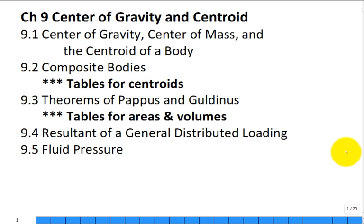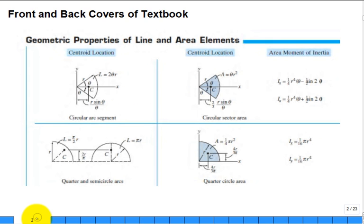All right, the last thing we want to do in chapter 9 before leaving it is talk about the tables that are available in almost every statics textbook that I've seen. All of the statics textbooks I've seen have tables which organize some information. Here they are on your back covers of the textbook. I think they're only on the back. I think there's other information in the front covers.